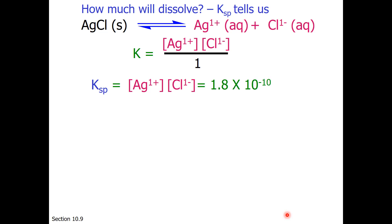And if you look that up in a table, at 25 degrees Celsius, this value is 1.8 times 10 to the minus 10. That is, of course, much less than 1. So what does this Ksp value mean?